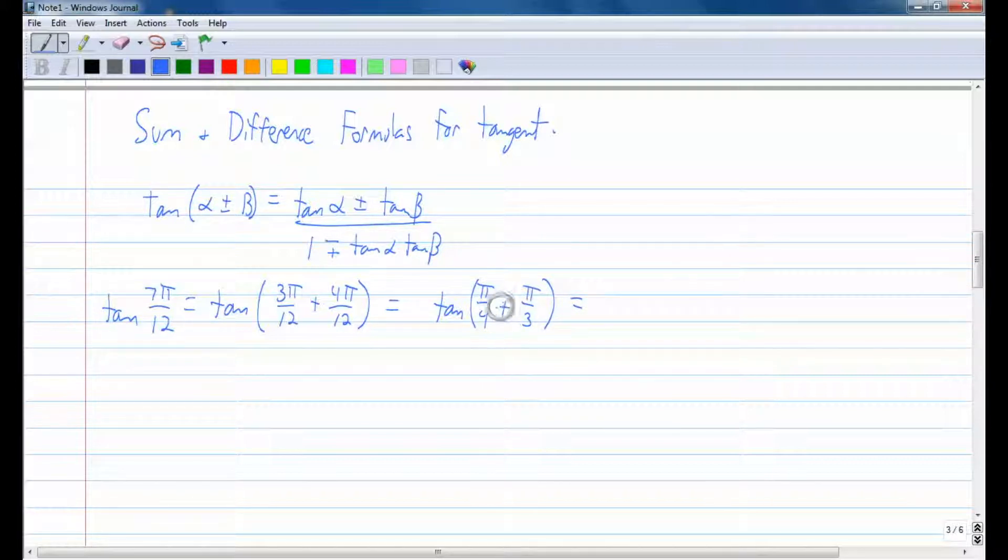I have a plus here, so this is a sum for tangent. So I need to make sure that I put a plus in the numerator and a minus in the denominator. So this is going to be the tangent of π/4 plus the tangent of π/3 over 1 minus the tangent of π/4 times the tangent of π/3.